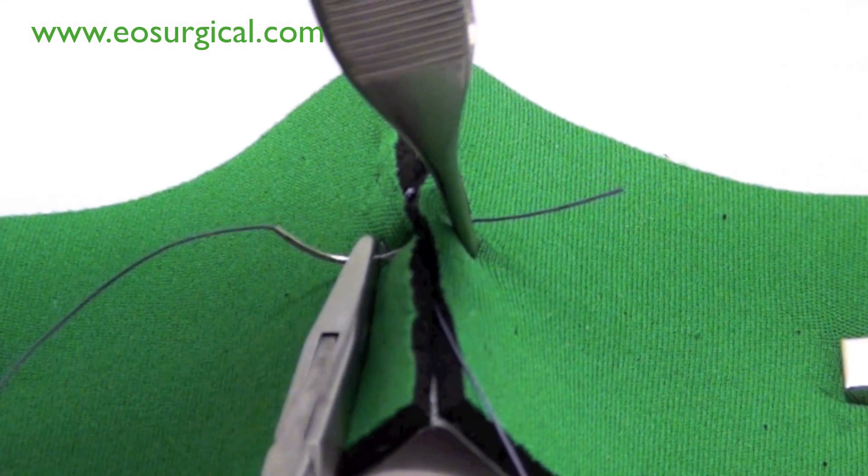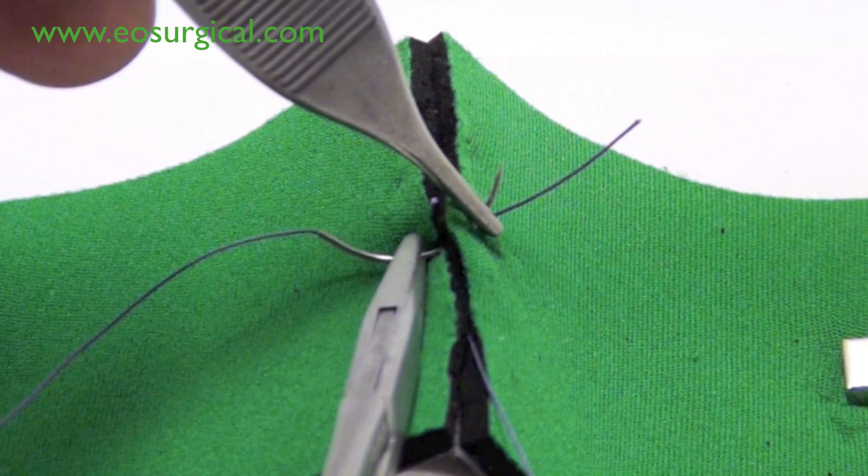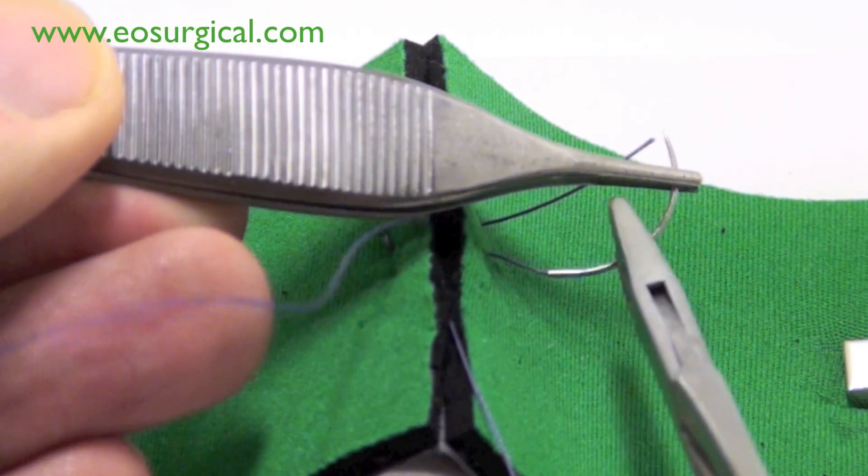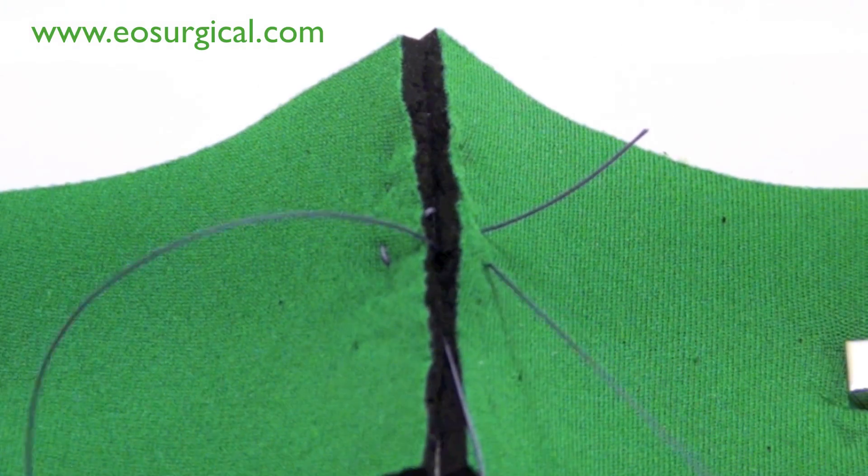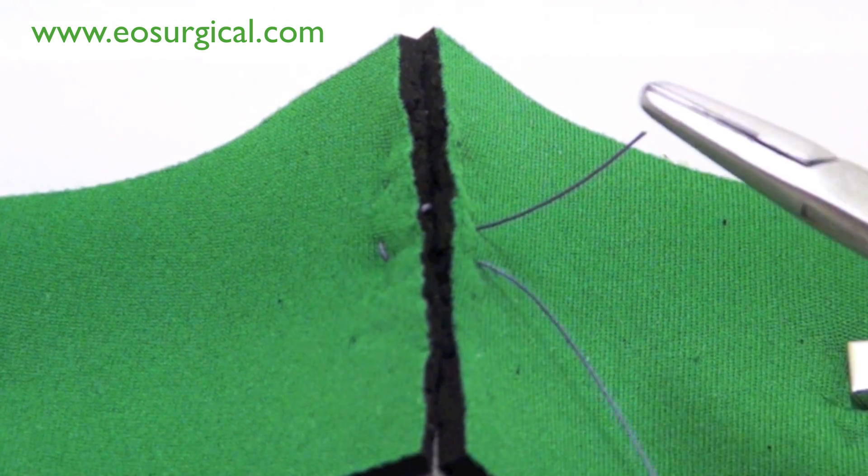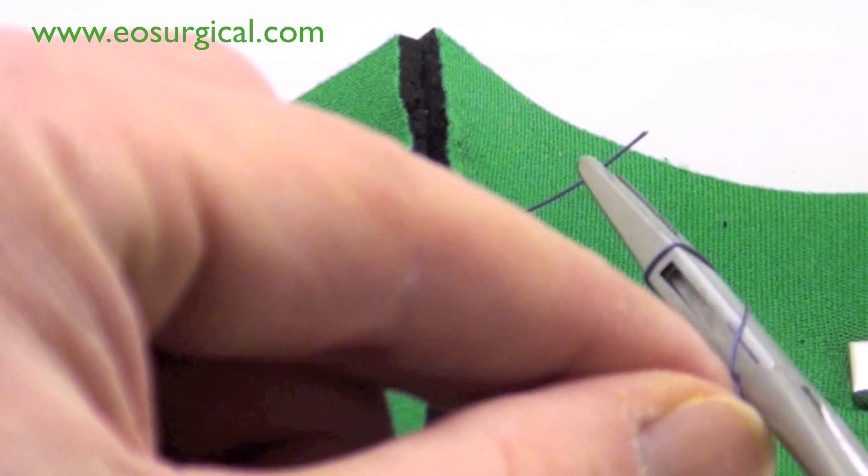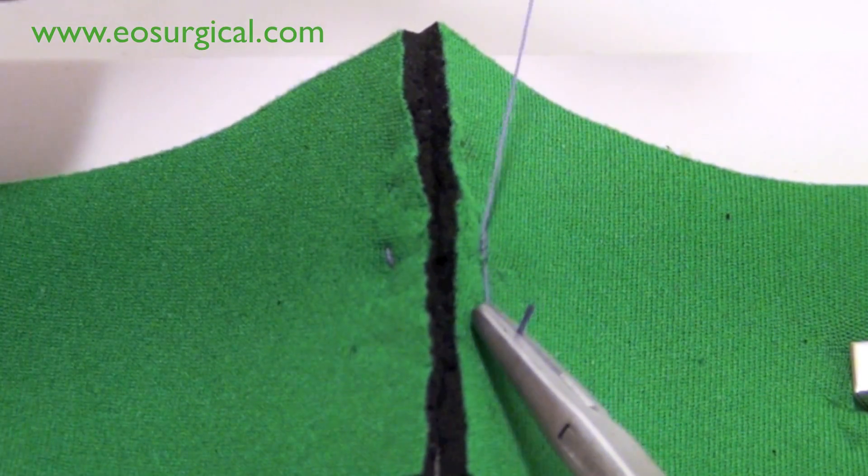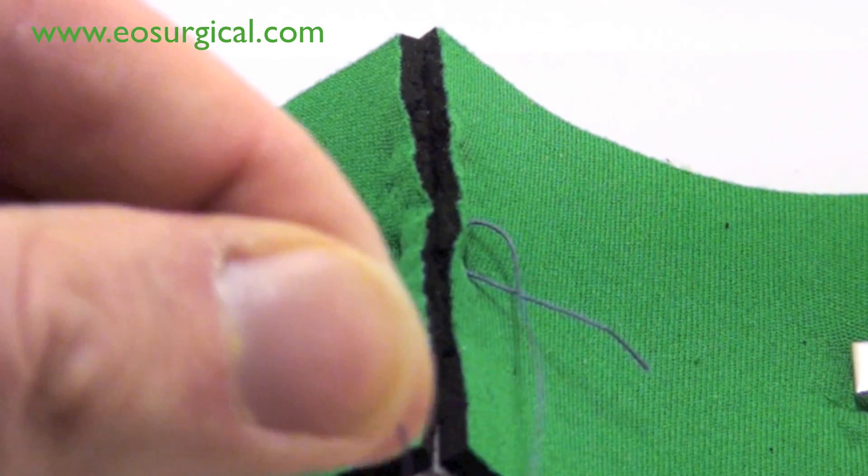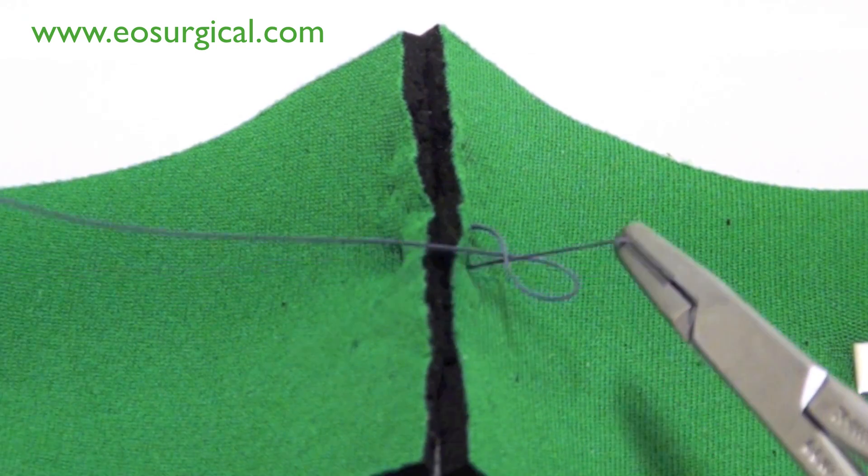The suture is now tied at this point. Now, you'll be able to see how the horizontal mattress causes the wound edges to evert up.